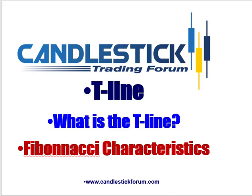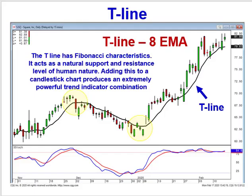So when you combine those two on a chart — the graphics, the candlesticks, and the T line — you're combining a very high probability trading strategy. The T line is very effective for keeping people in trades without getting whipsawed out. This eight exponential moving average just acts like a natural support and resistance level. If you see a sell signal and a close below the T line, you're in a downtrend.